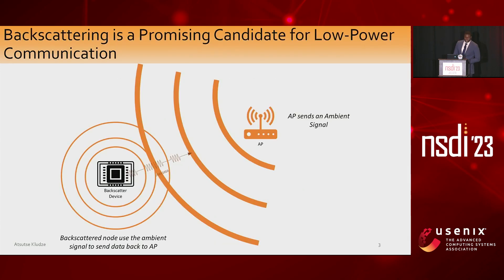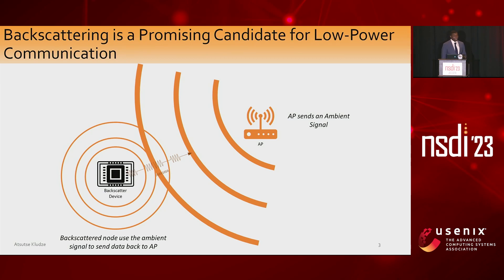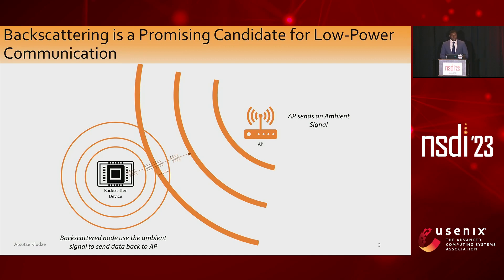Backscattering is a promising candidate for low-power communication, because instead of generating and transmitting its own signal, it actually uses any ambient signal it receives and reflects it back while embedding modulated data on it. This helps keep the power consumption to a minimum by removing all power-hungry components you would normally use, such as any signal generation. And current backscattering devices are really good at doing this, but they don't solve a key issue.